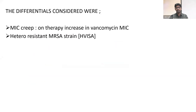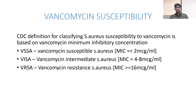The differentials considered were MIC creep — that is an increase in vancomycin minimum inhibitory concentration over the duration of therapy — or a hetero-resistant MRSA strain. The CDC definition for classifying Staphylococcus aureus susceptible to vancomycin is based on minimum inhibitory concentration: susceptible is MIC ≤2, intermediate is MIC 4–8, and resistant is MIC >16.